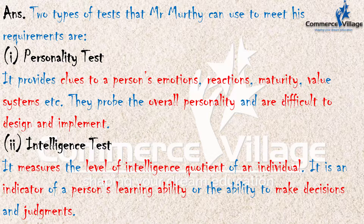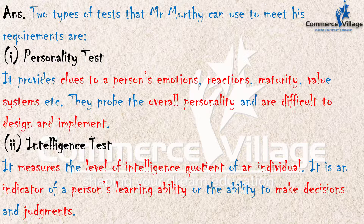Here is how to write it in the exam. Number one, personality test: it provides clues to a person's emotions, reactions, maturity, value systems, etc. They probe the overall personality and are different to design and implement. Number two, intelligence test: it measures the level of intelligence quotient of an individual. It is an indicator of a person's learning ability or the ability to make decisions and judgments. Thank you.